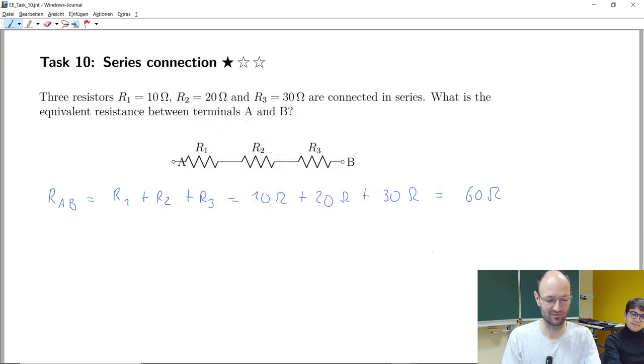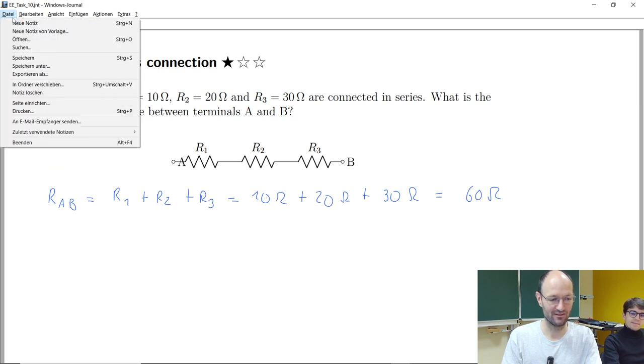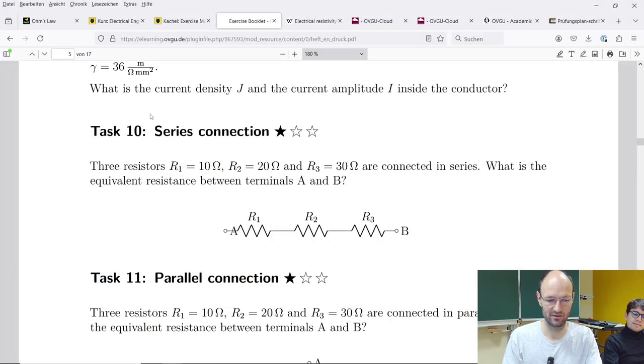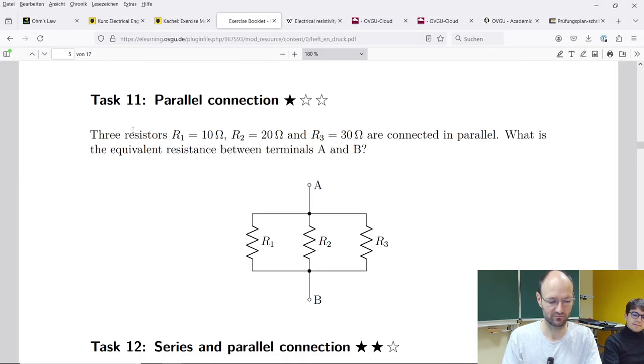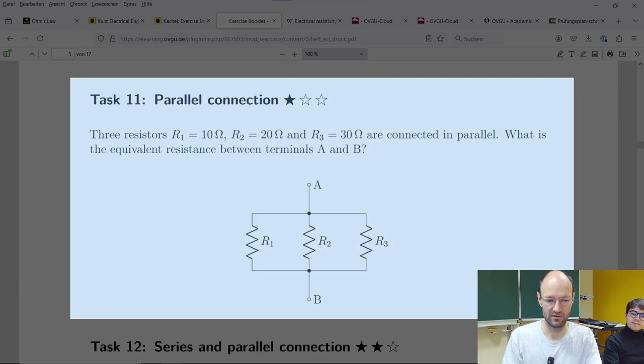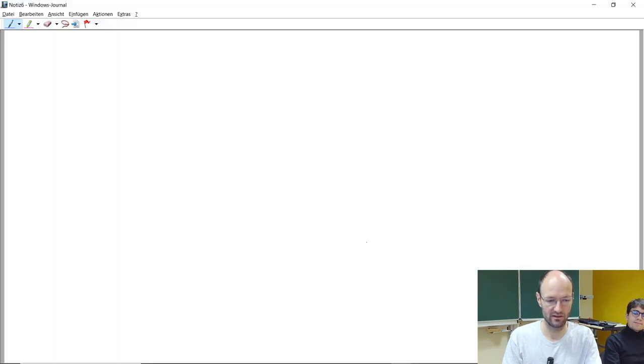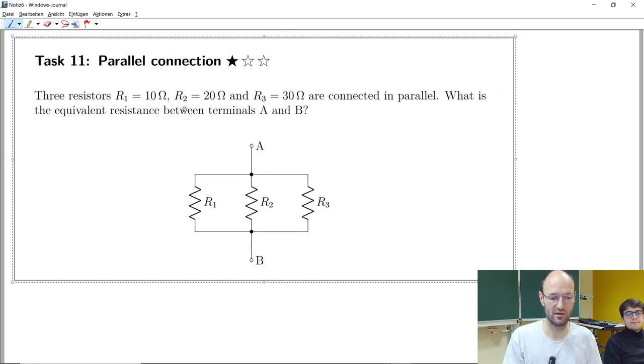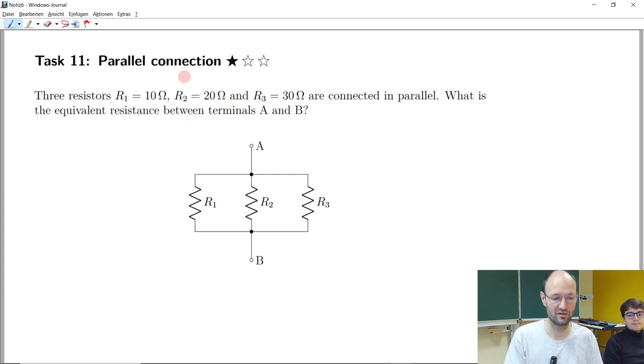Okay, so I will also directly export. So then, new blank note sheet. Going back to the exercise task booklet. Copy the next one. And so in this task 11, we have once again three resistors, 10, 20 ohm and 30 ohm. But now they are connected in parallel. And once again, we are looking for the total resistance or equivalent resistance between these two terminals.